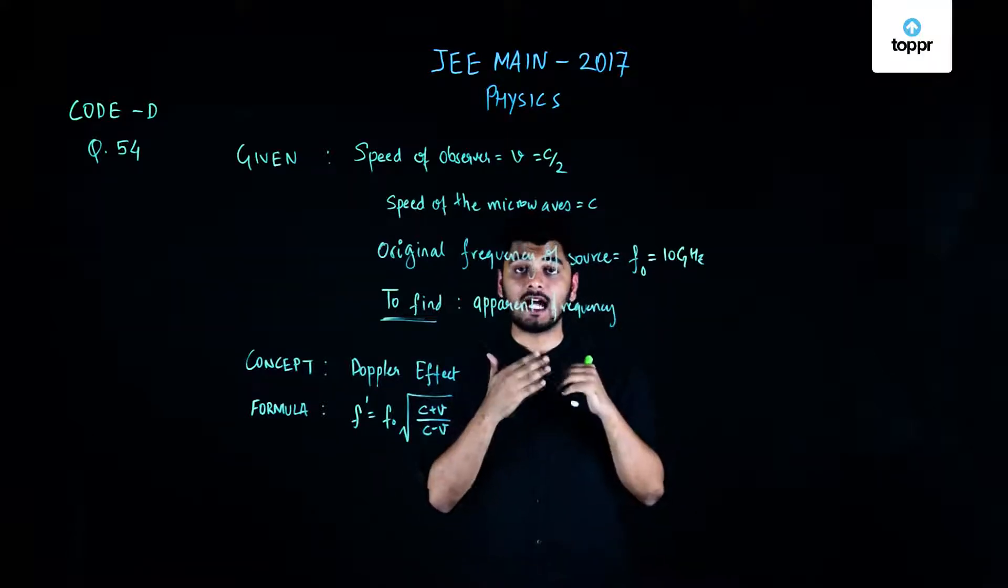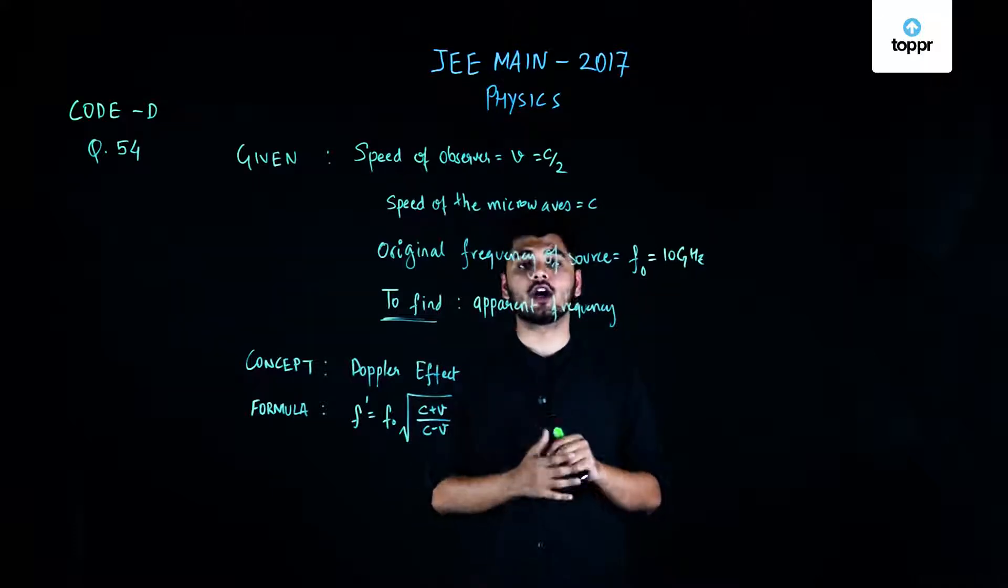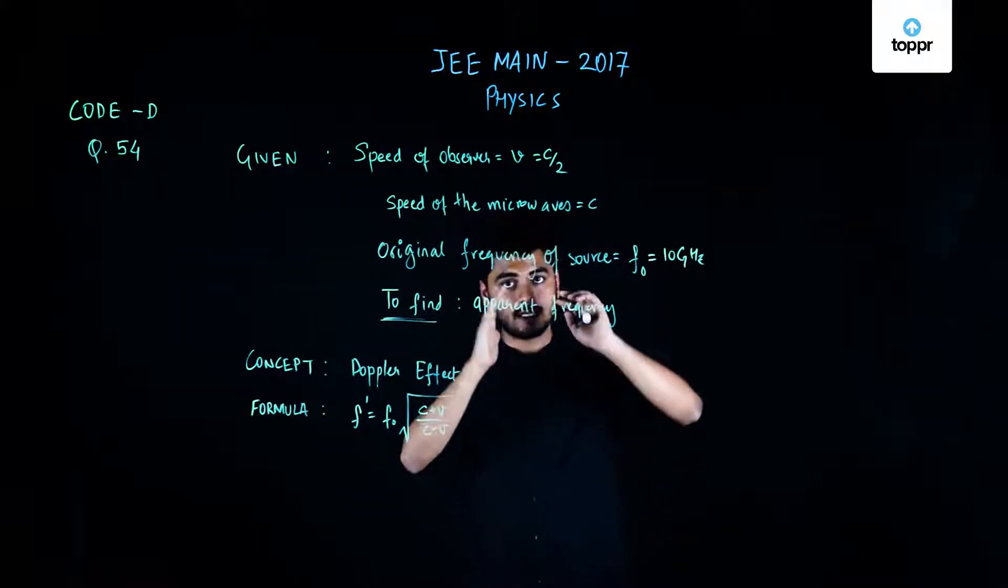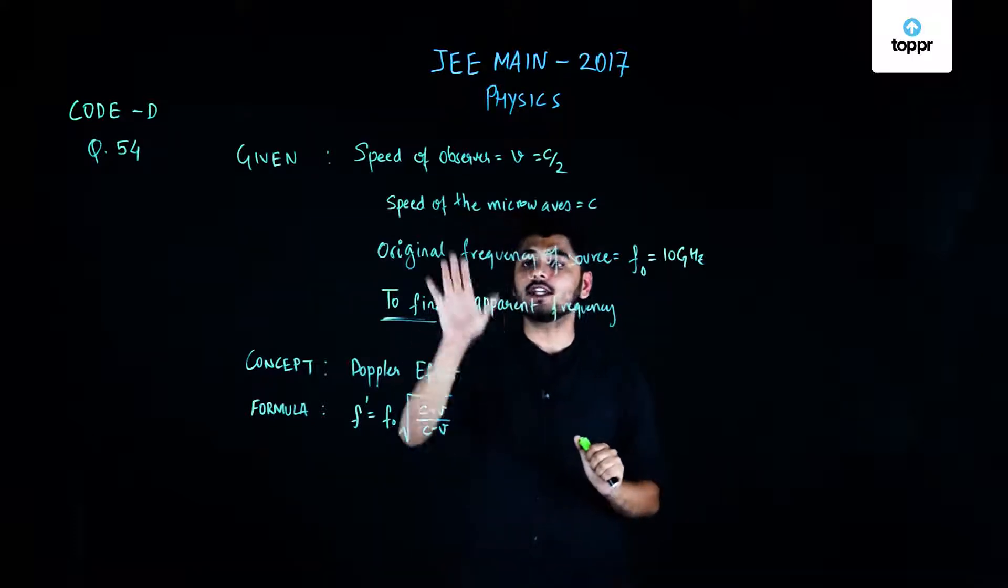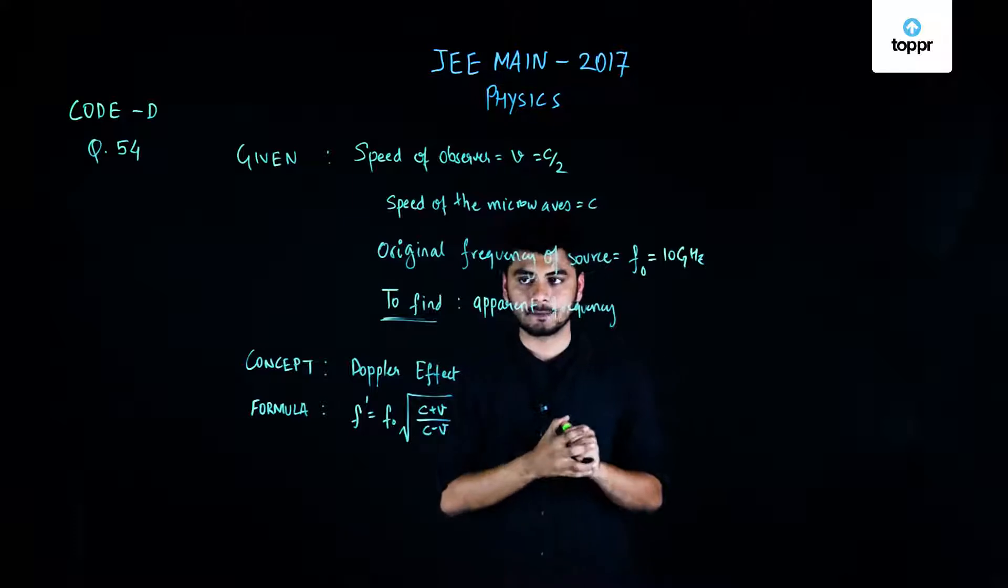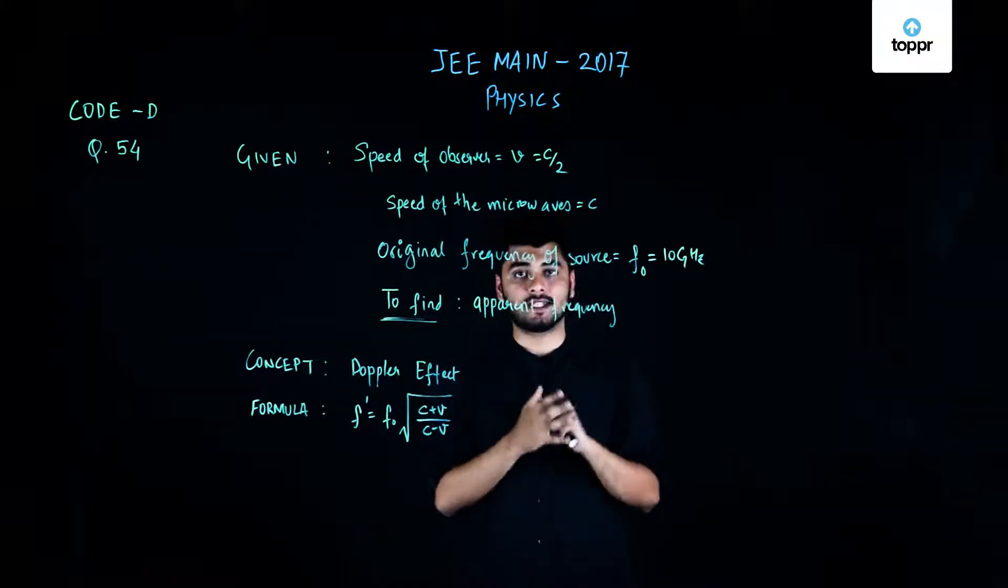We need to find the apparent frequency of the microwave visible to that observer if the original frequency of the source is equal to 10 gigahertz. What we need to find is the apparent frequency.